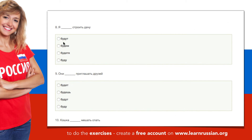The next one. Я — I. Строить — to build. Дачу — a summer house. The options are: будут, будем, будете, буду. In the video lesson I explained to you why we put -у instead of -ю in this case. Я буду строить дачу. I will build a summer house.